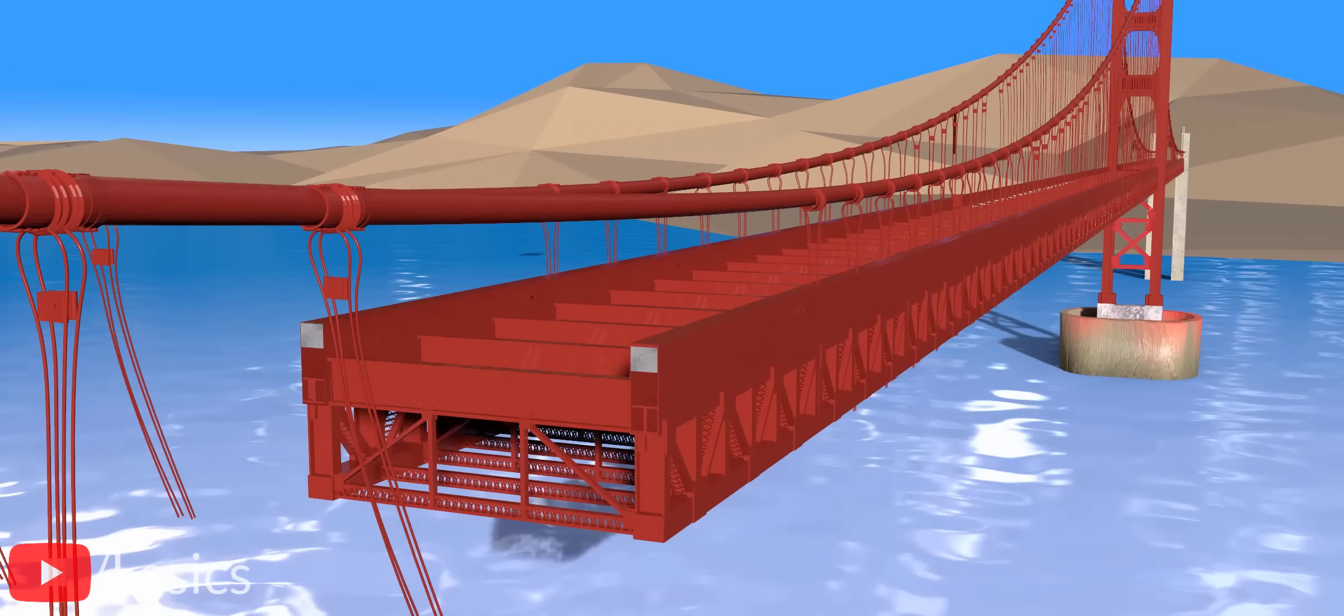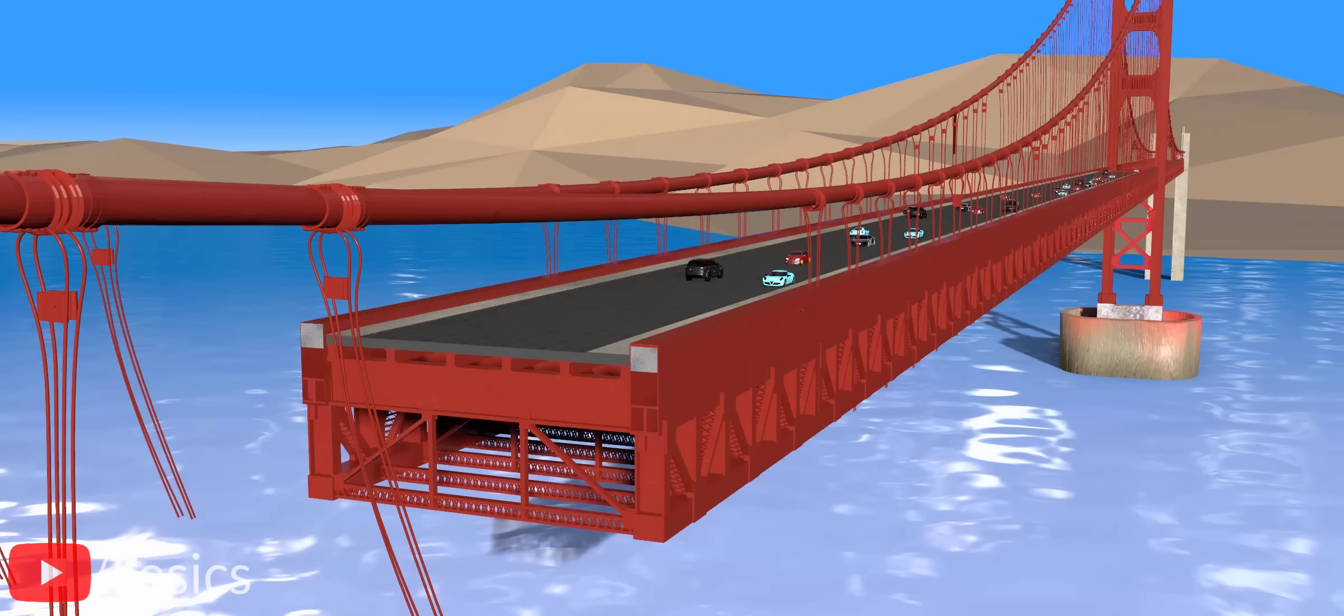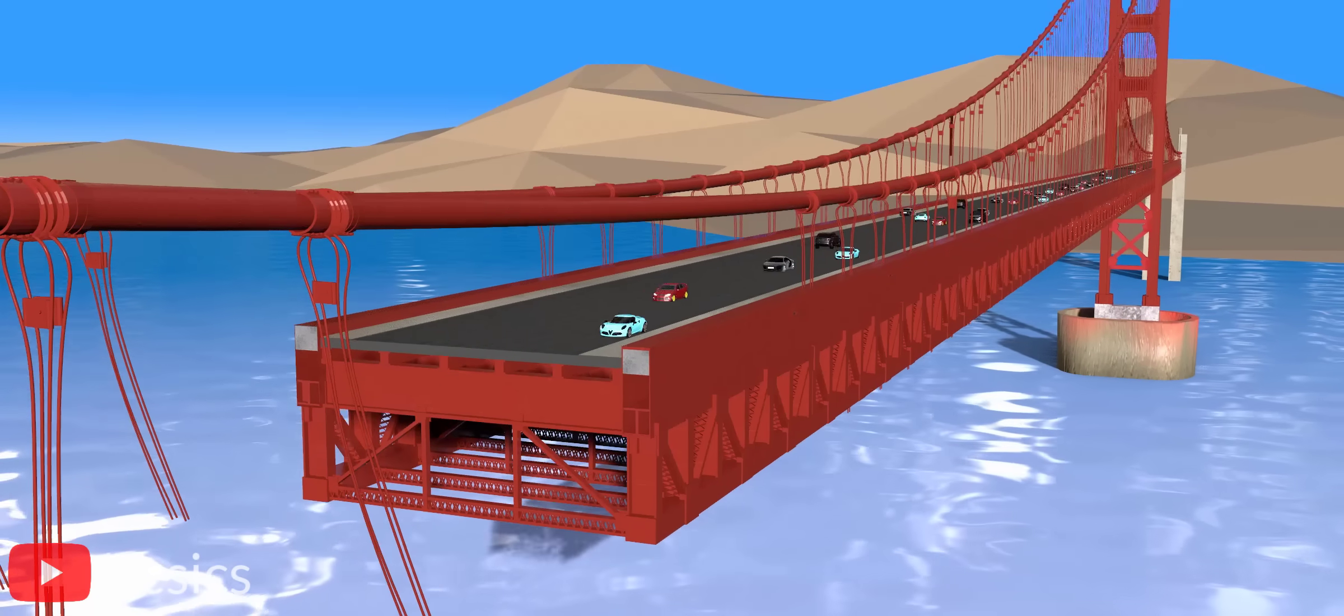The road deck is placed on this structure. Mr. Strauss kept the width of the road to 27 meters to account for current and future traffic demands.